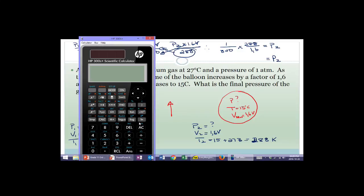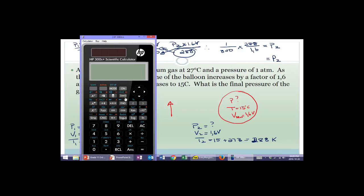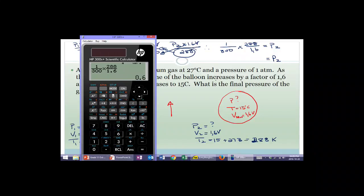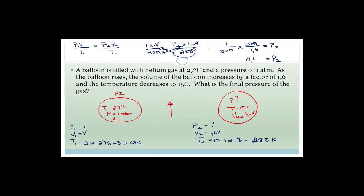Using the calculator: 1 over 300 times 288 over 1.6 equals 3 fifths, or 0.6. The pressure is now 0.6 atmospheres. We do expect the pressure to be going down because the temperature has gone down and the volume has increased. So if the temperature has gone down and the volume has increased, obviously pressure is going to decrease as well.